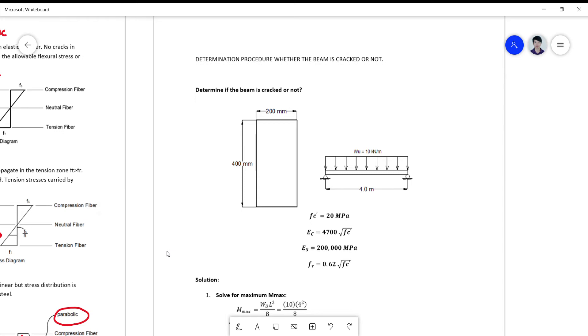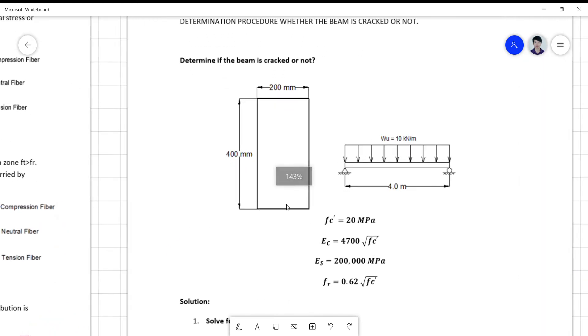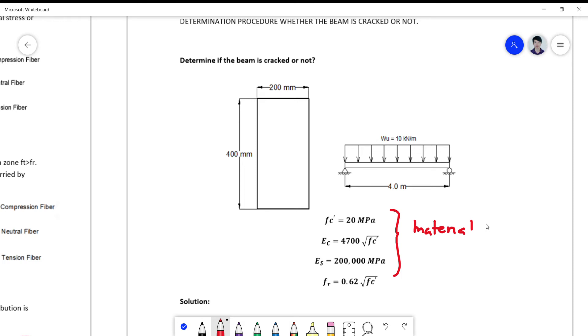So assuming that you have a rectangular beam 200 by 400 millimeter in dimension, and the beam is simply supported, having a span of four meters and having a uniform load of 10 kilonewton per meter. Your material properties are given, so these are the material properties.